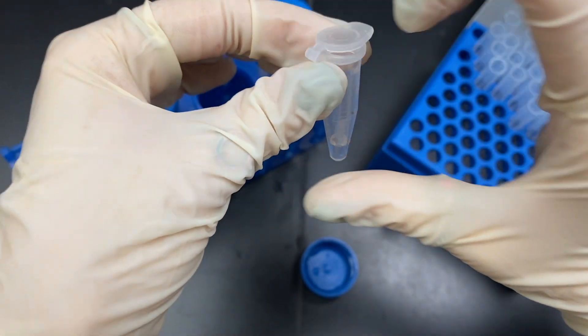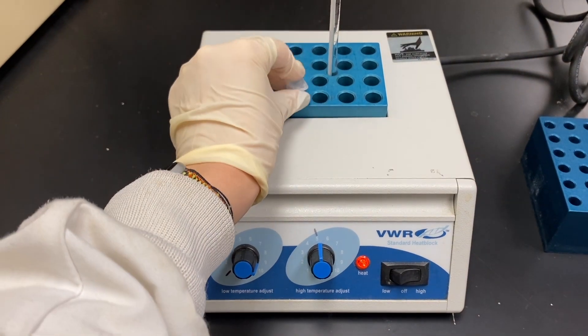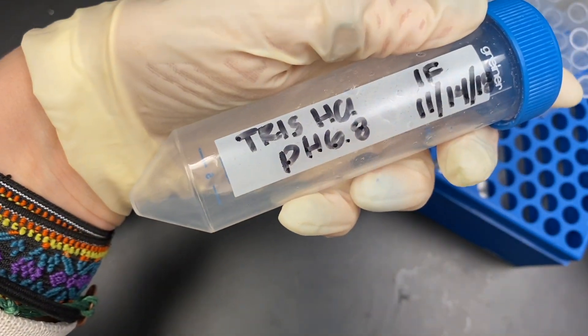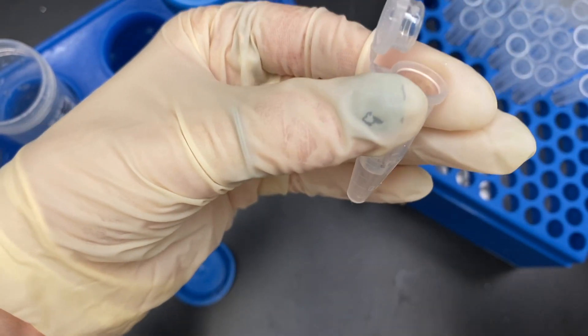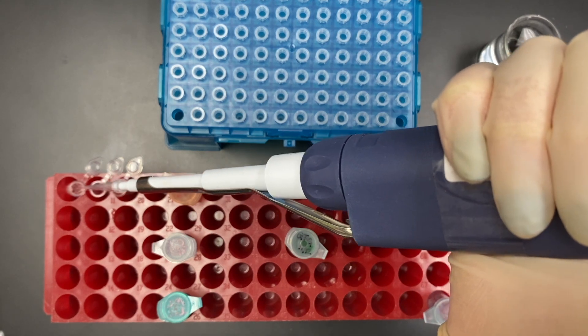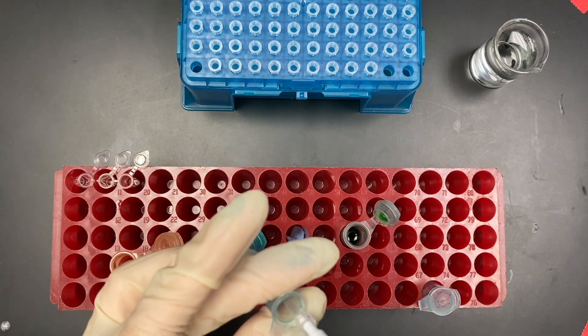After heating the sample for about one hour, I stop the reaction by adding 30 milliliters of tris hydrochloric acid, which will work to restore the pH of the solution. Now, I will prepare the sample. In a mini test tube, I add 8 microliters of deionized water, followed by 1 microliter of primer.